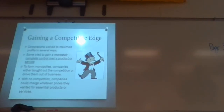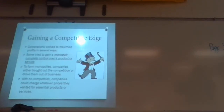Taylor, when she got her grocery store, she took out a loan. She went to the bank, the bank gave her a loan, she took that money and opened up a grocery store. So what does Taylor have to do with her profits? She has to pay back her loan. Taylor has to make a certain amount of money because she has to pay this loan.